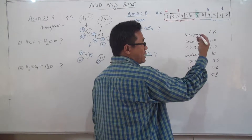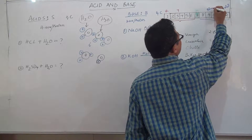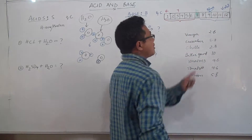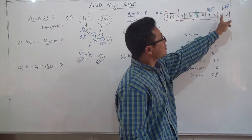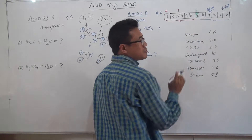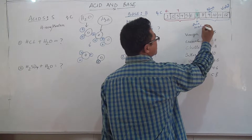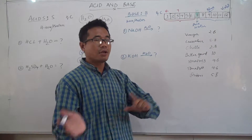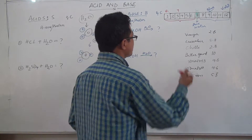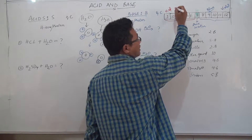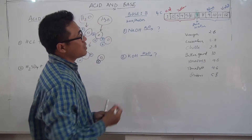On the pH color scale, the more basic a substance is, the color is violet or blue — values like 10, 11, 12 are quite basic. Green is neutral, and this is where pure water falls — pure water is neutral, neither base nor acid. Red and yellow indicate acidic substances — the redder or more yellow, the more acidic.